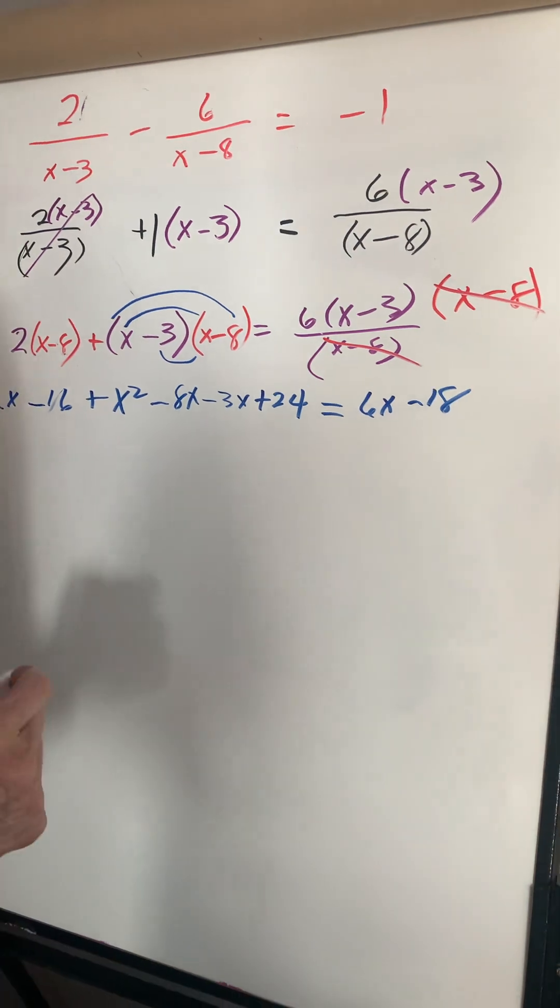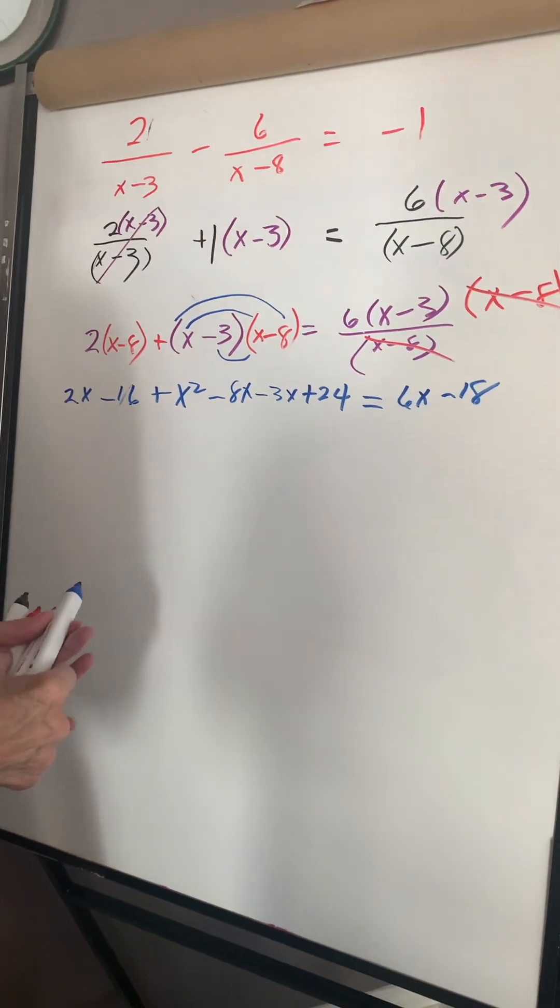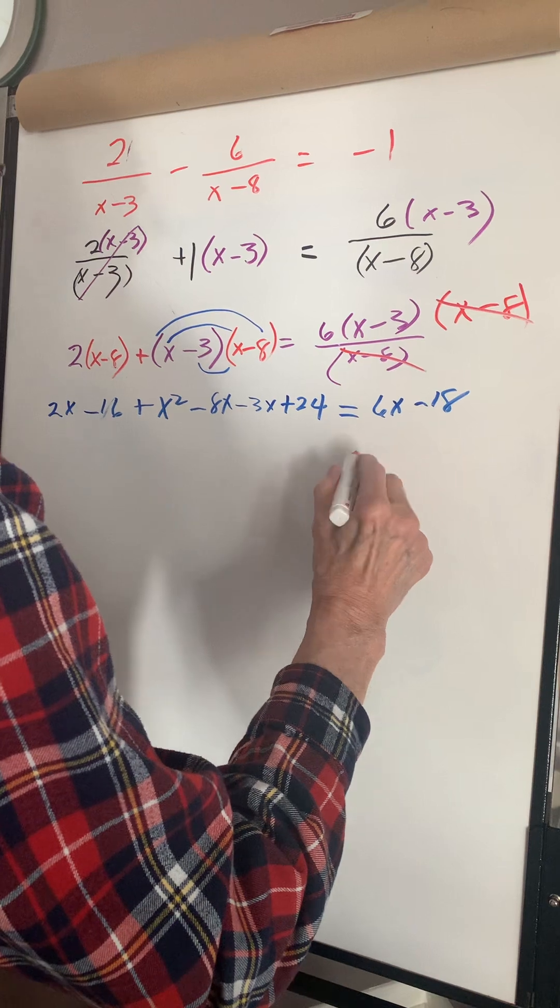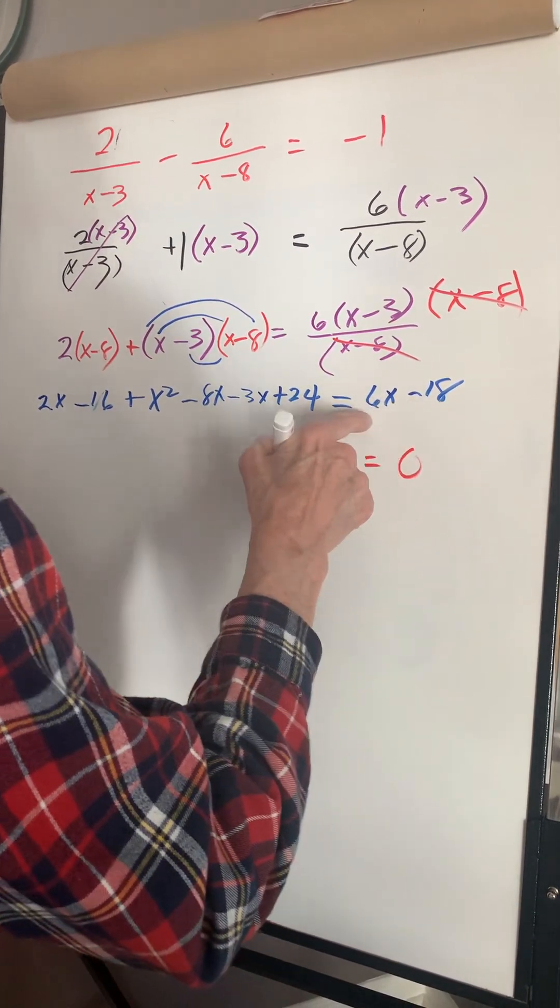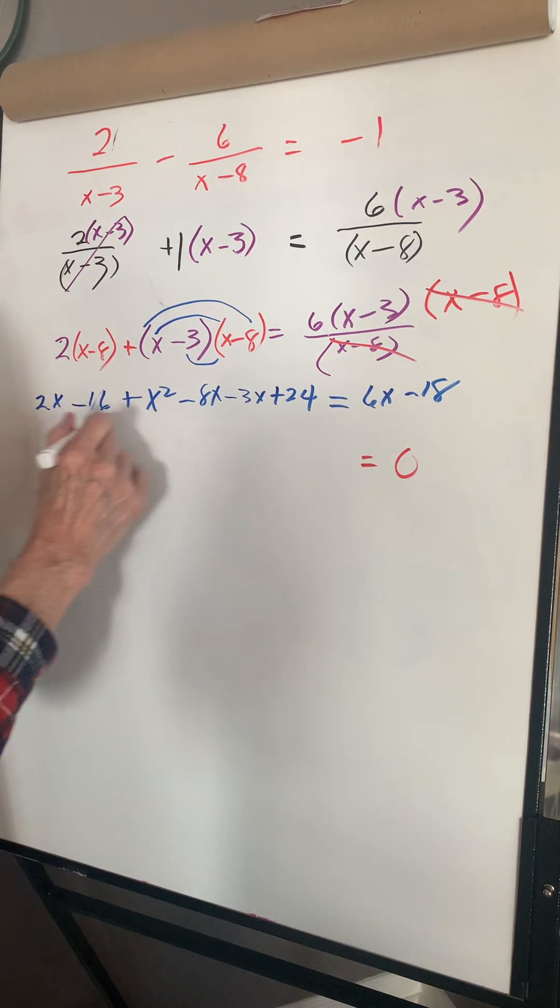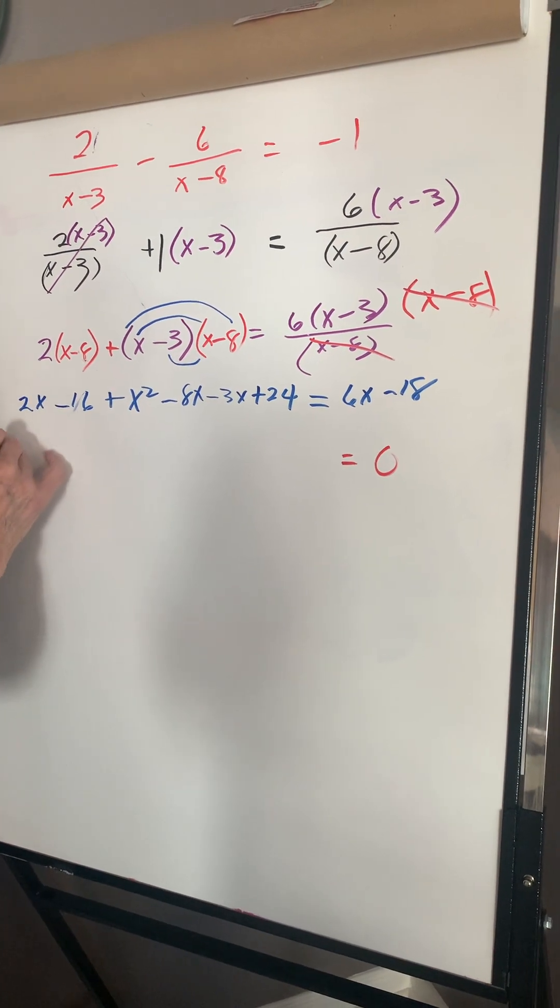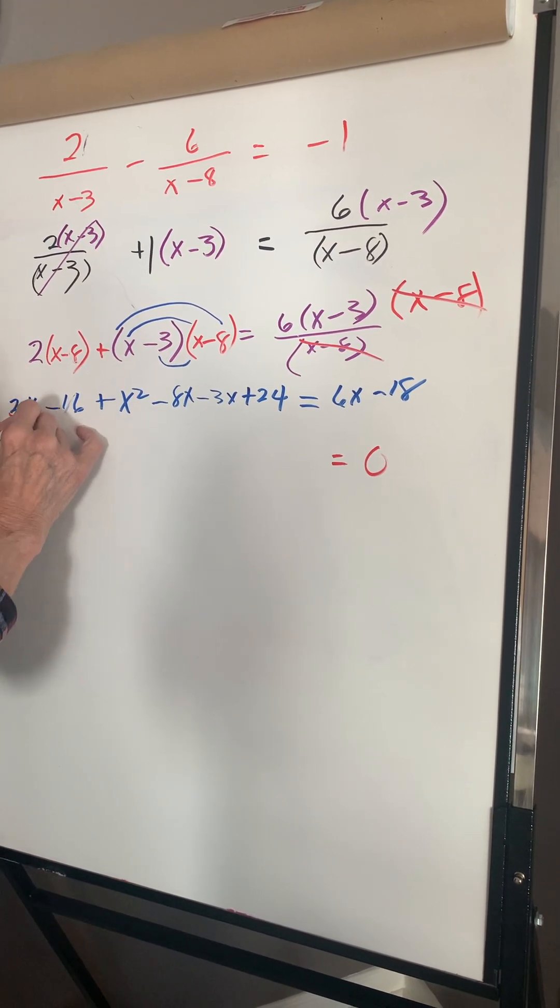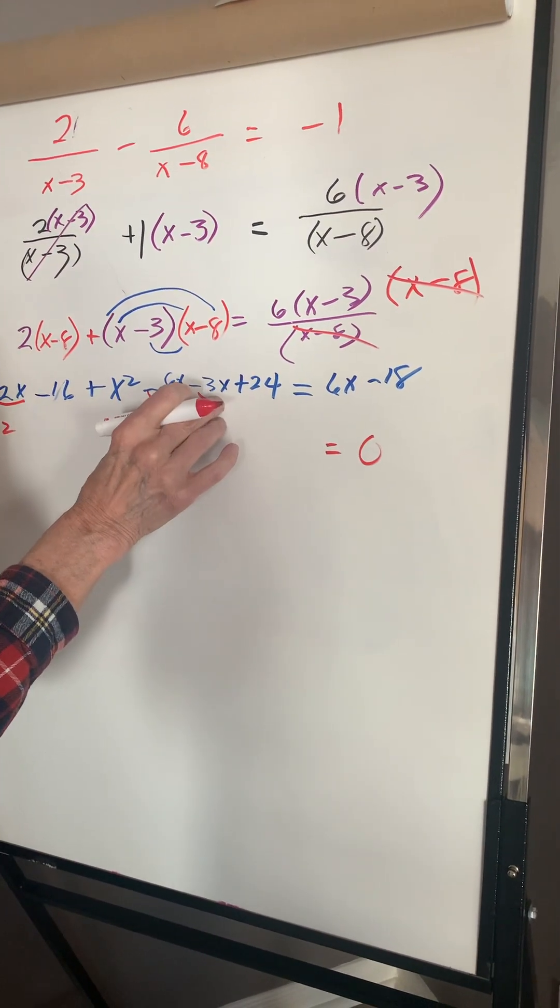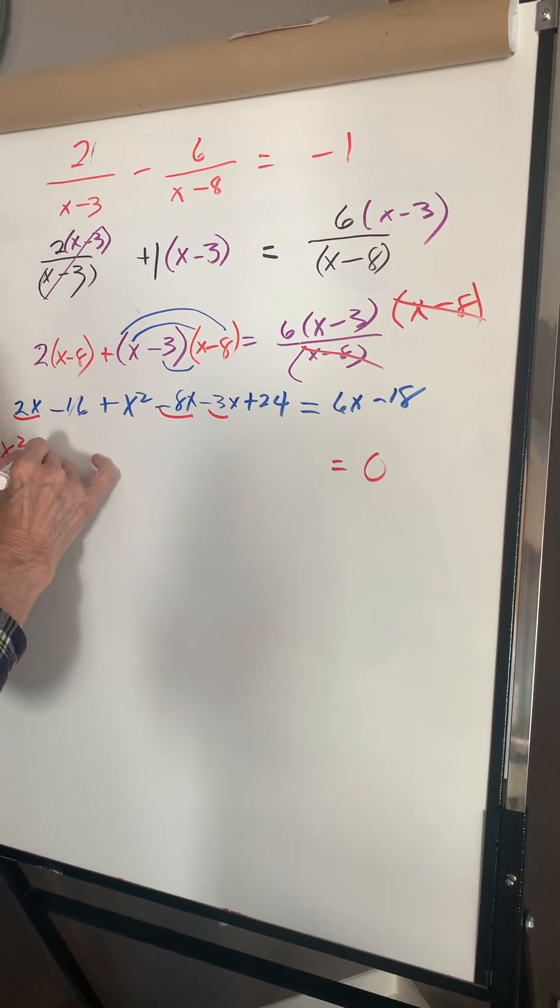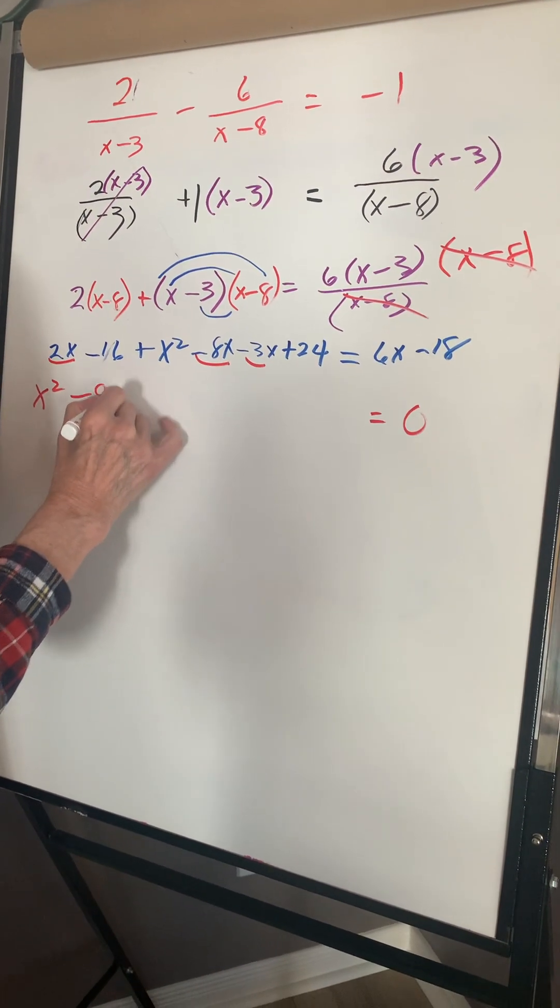All of this comes over here. Let's start off with the x squared term first. We have 2x over here, we have this and this. This is minus 11 plus 2 is minus 9. They are x's.